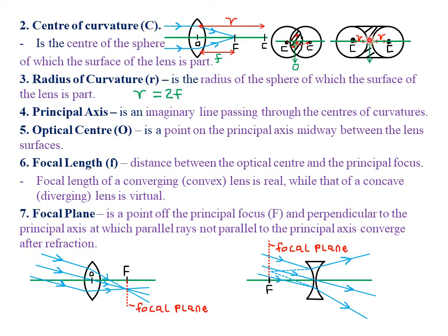Similarly, for the case of a bi-concave lens, we have two spheres — a first sphere of radius R and center C, and a second sphere of the same radius R and center C. The shaded part in between is what forms our biconcave lens. The centers of those particular spheres from which our concave and convex lenses are obtained is what we call the centers of curvature. It is simply the center of the sphere of which the surface of the lens is a part.